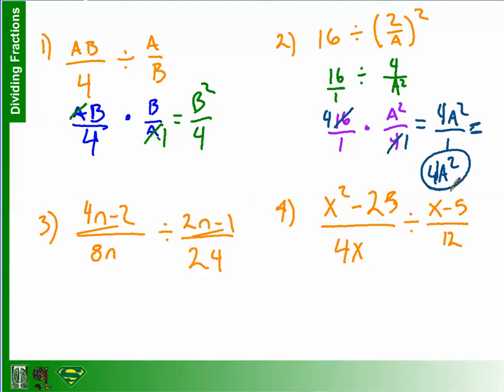Okay. So let's take a look at question 3, which is going to be more complicated. Before we do anything else, you notice that you have some polynomial expressions. You have a polynomial in the first fraction in the numerator. You have a polynomial in the second fraction also in the numerator. Can either of those polynomials be factored? Which one? 4N minus 2. 4N minus 2 can be factored. So what does that factor to?